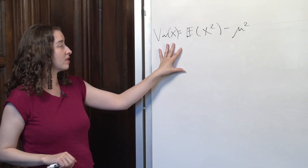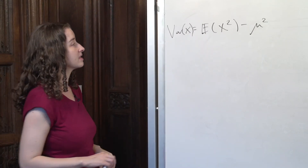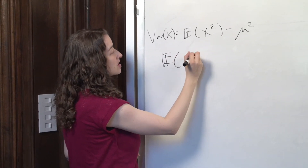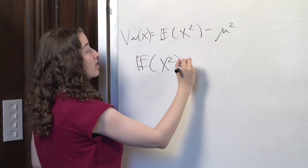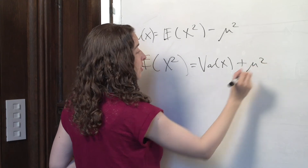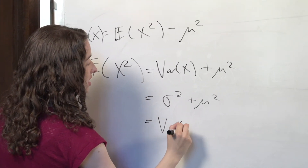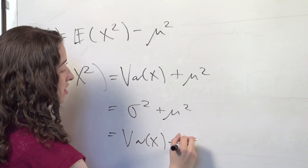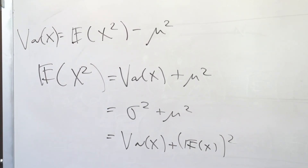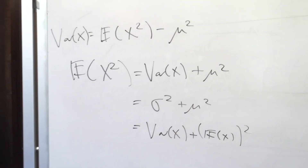When is this useful? We'll use it in a few different situations. This equation implies: if I add mu squared to both sides, and I happen to come across the quantity expectation of x squared, I can now write that as variance of x plus mu squared. There are lots of different notations for this, but they all mean the same thing. Whenever I come across the quantity expectation of x squared, I know I can write it in terms of sigma squared and mu squared.